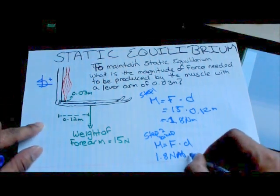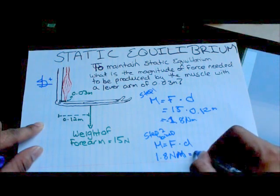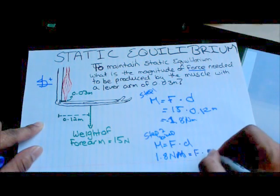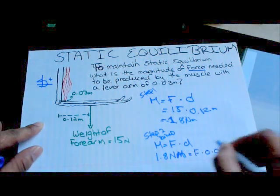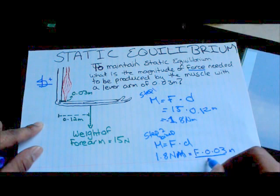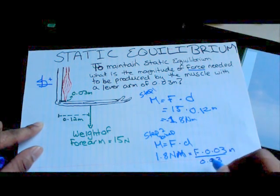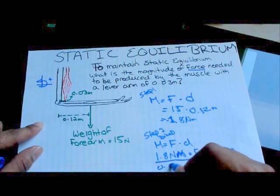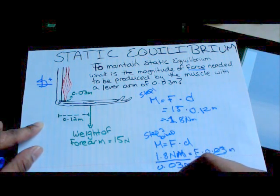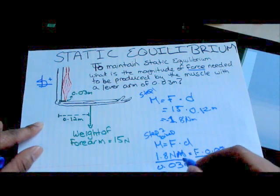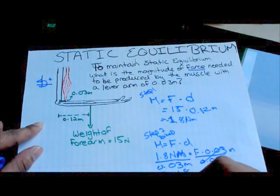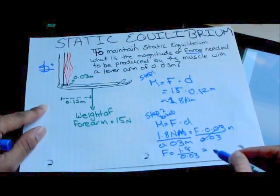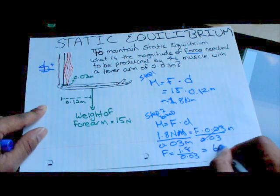So this is equal to, we don't know the force yet, this is what we're trying to find. But we are given the moment arm, 0.03 meters. So the force is equal to 1.8 divided by 0.03 is equal to 60 Newtons.